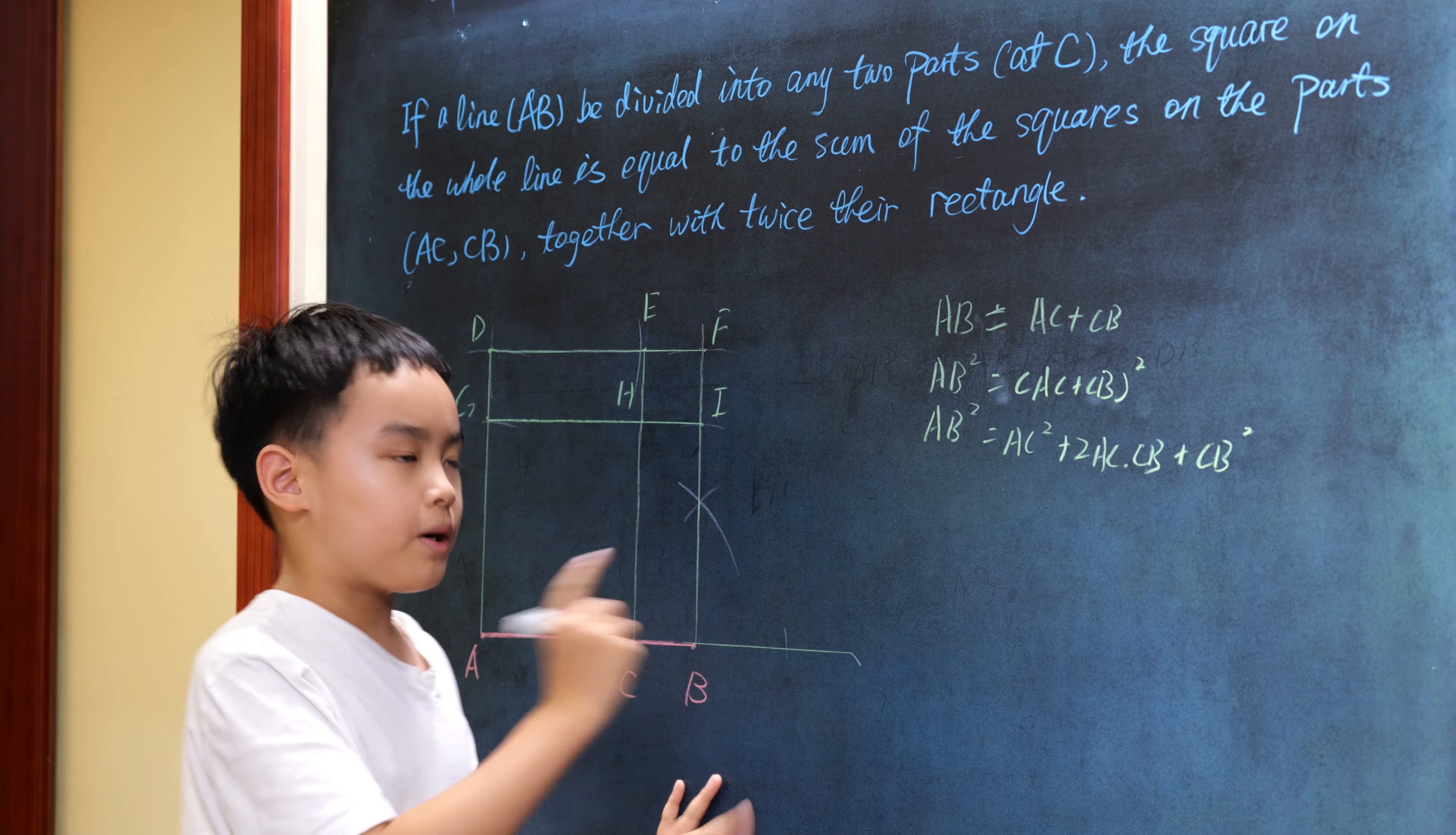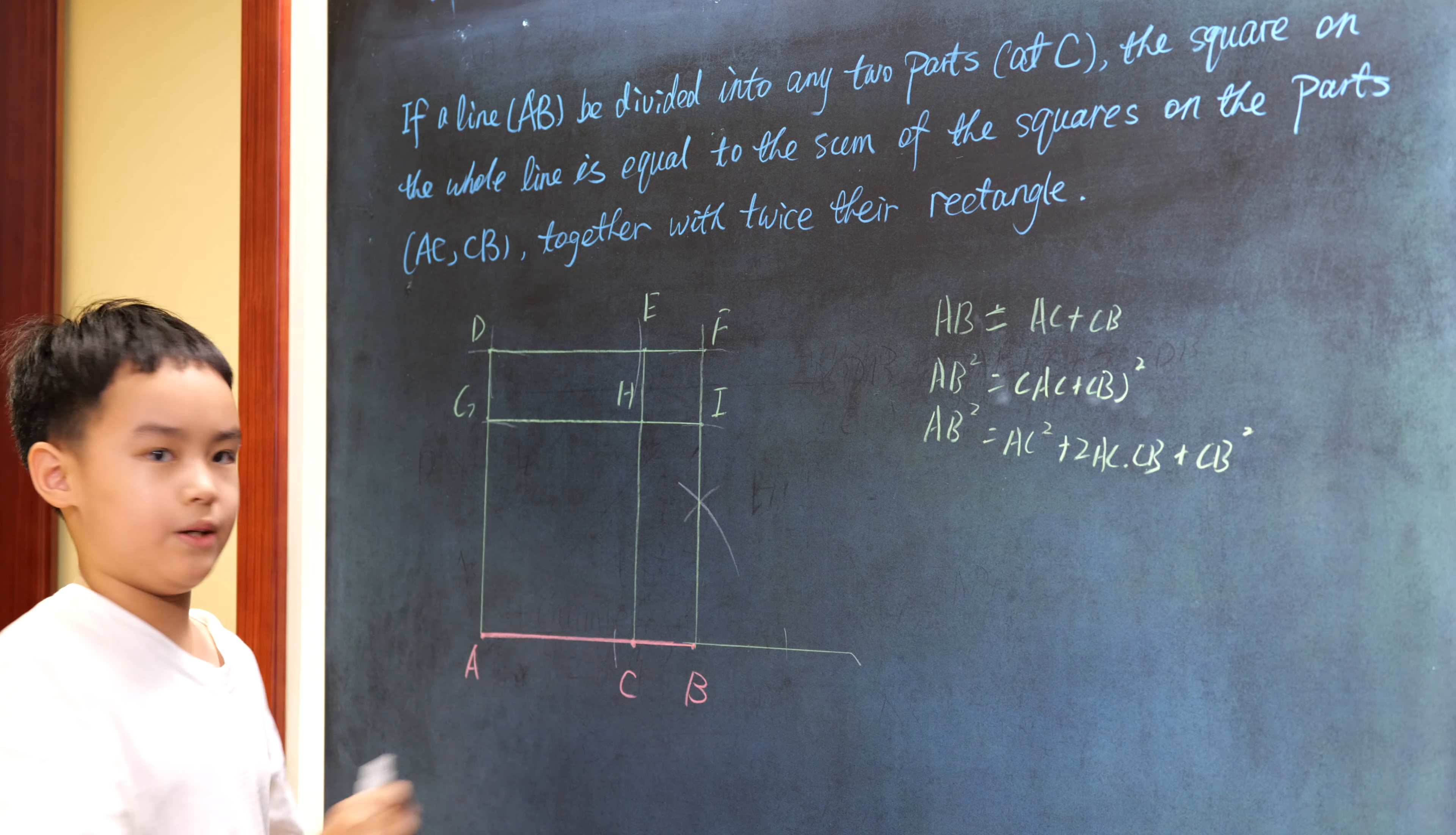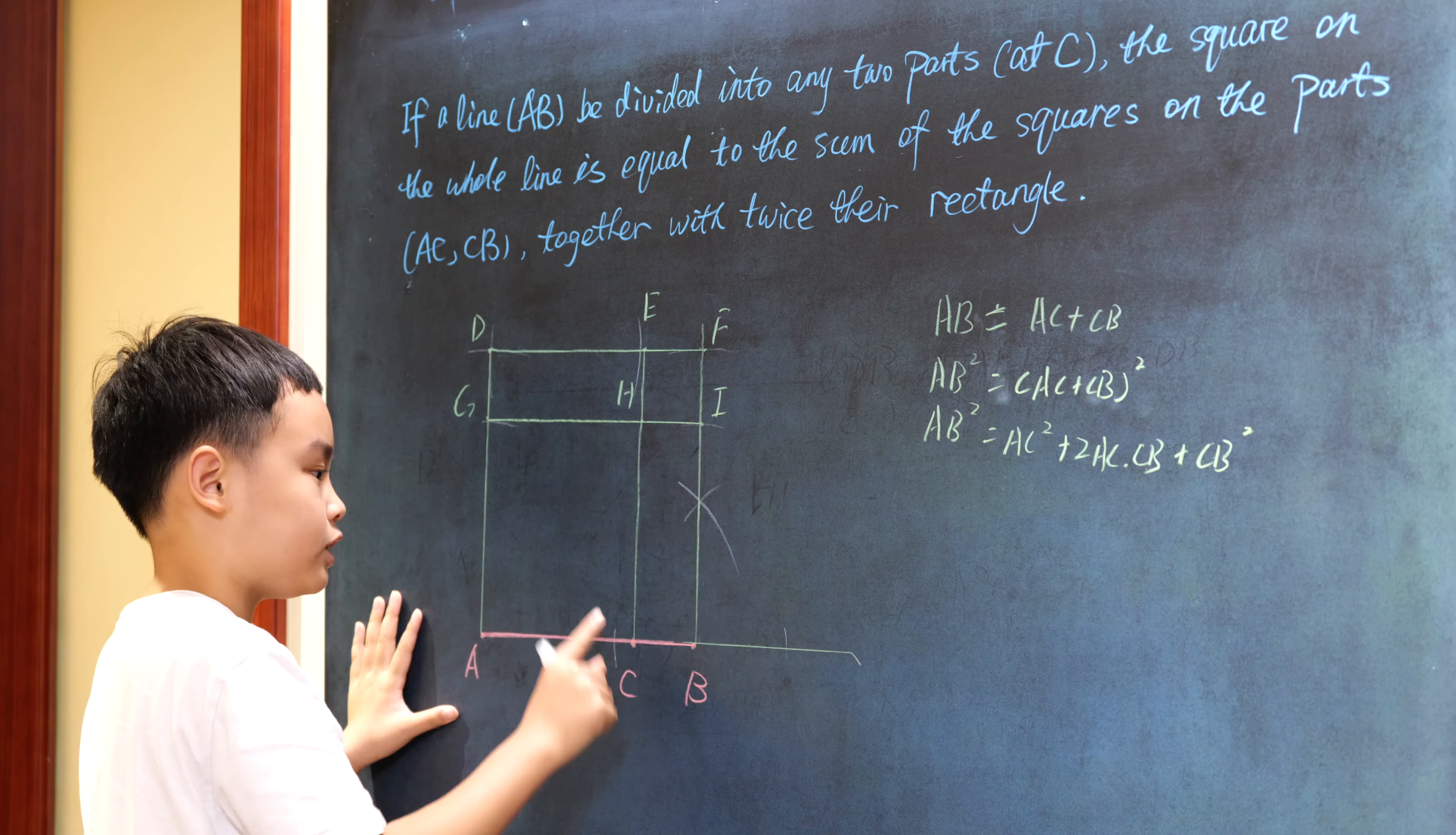Then let's look deeper into this equation. The square of AB is just the square ADFB, and it's equal to the square of AC, that's the square AGHC.